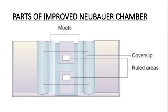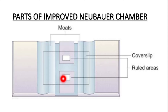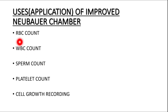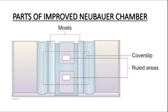Now, what are the parts of the improved Neubauer chamber? In this chamber, there is a presence of two ruled areas. Over each ruled area, a thick cover glass — not an ordinary cover slip — is placed for performing WBC count, RBC count, sperm count, or platelet count. On the sides of the ruled area, there is a tunnel known as the moat, which is for drainage of excessive fluid.